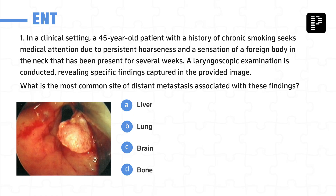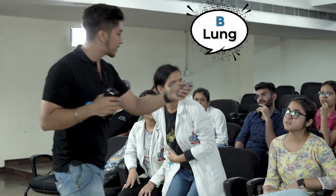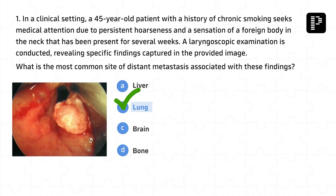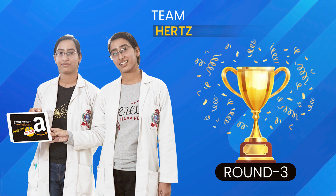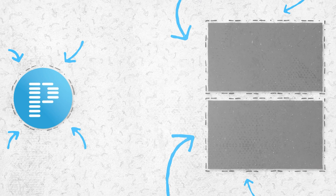Final question: a 45-year-old patient with a history of chronic smoking presents with persistent hoarseness and a sensation of a foreign body in the neck for several weeks. Laryngoscopy examination reveals specific findings in the provided image. What is the most common site of distant metastasis associated with this finding? Team one answers: lungs. Team two answers: bone. The correct answer is lungs! Congratulations to Medical Marvels — you did a splendid job. Please like, share, and subscribe and watch more from the Prep Ladder team. Thank you!